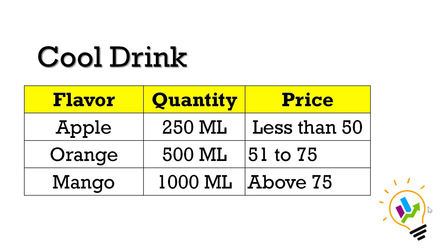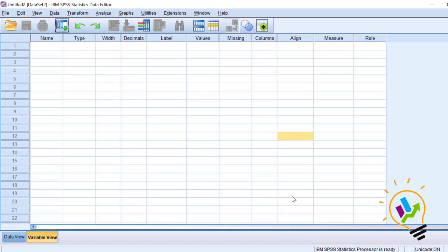Conjoint analysis will be conducted in two stages. In the first stage we will create the combinations of these three attributes. In the second stage, after the survey is conducted on these combinations, we will try to understand which is the most preferred combination and which is the least preferred combination, so that marketing people can introduce the most preferred combination in the market.